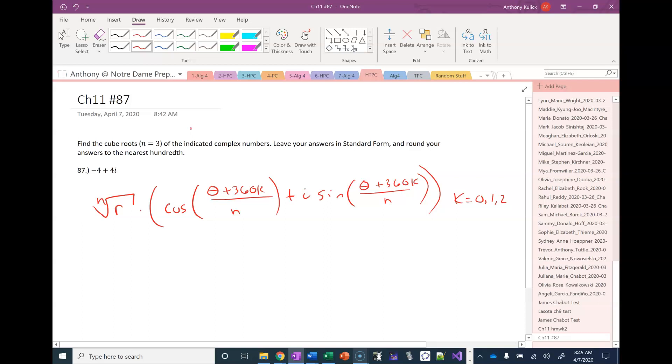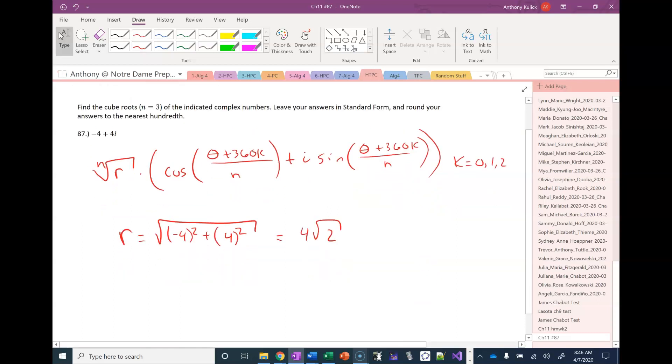Now in order to use this we're going to need the trigonometric form for this complex number. What we're given here is the standard form for this complex number, but it's not too hard to get the trigonometric form. So to get r all I need to do is take the square root of a squared plus the square root of b squared. So that gives me 4 square root 2.